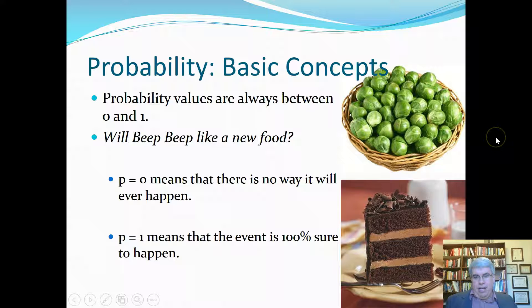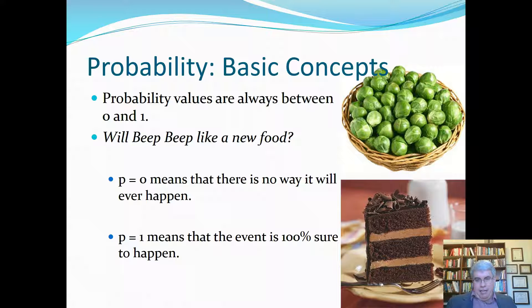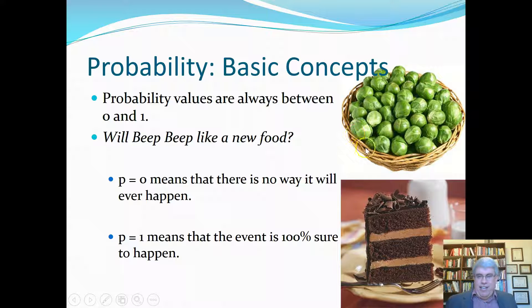If we offered him food he didn't want, he would say there's no chance. However, if we offered him a new food that was chocolate and fluffy, the probability that he would like it would be 100% — a probability of 1. So probabilities are always between 0 and 1.